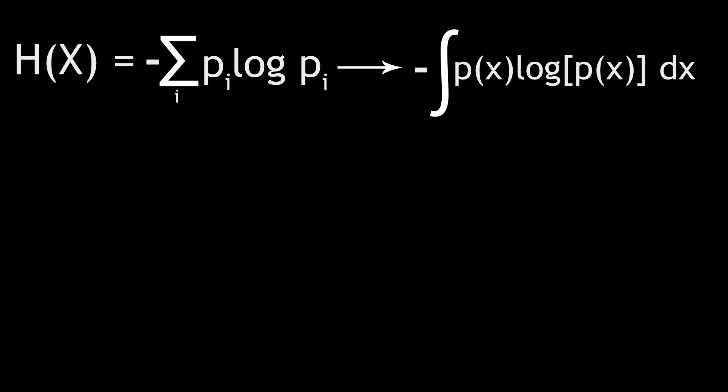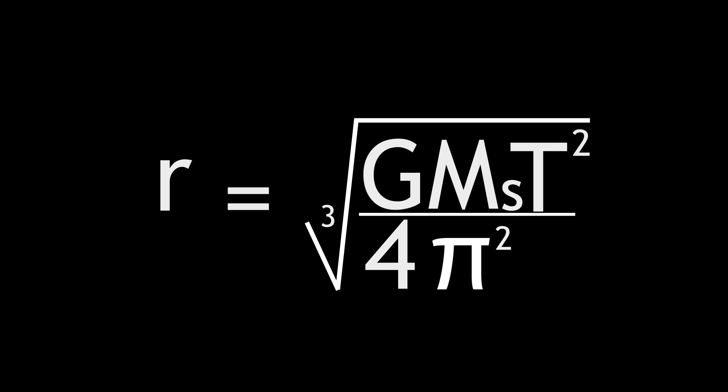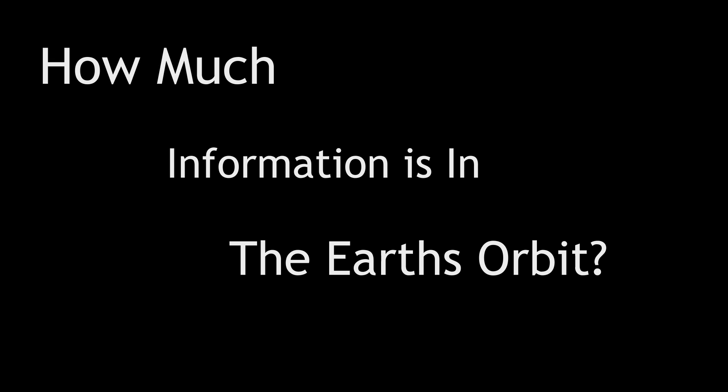So armed with Shannon's entropy formula, and the knowledge of how to calculate the amount of information in a probability distribution, and an equation for the radius of the Earth's orbit, we're ready to answer the completely obvious, and totally understandable question. How much information is in the Earth's orbit?